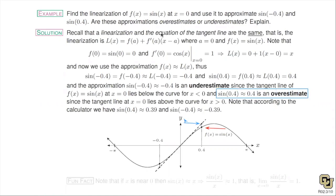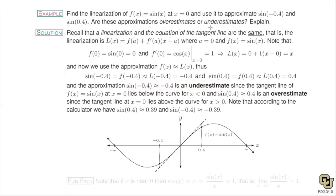On the other side, I'm trying to find the point on the curve for sin(−0.4), but I'm settling with the point on the tangent line. The difference in height is called the error. In this case, our approximation lies below the target, so the approximation that sin(−0.4) ≈ −0.4 is an underestimate. This comes purely from looking at the graph and comparing where the point on the graph lies relative to the point on the tangent line for the same x value.